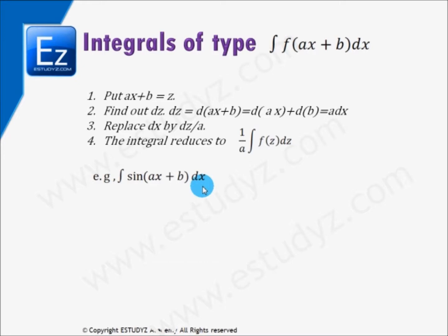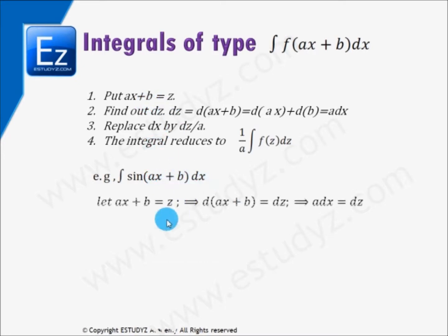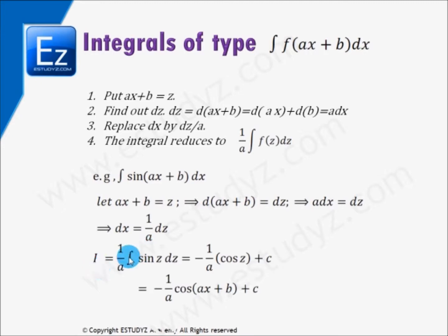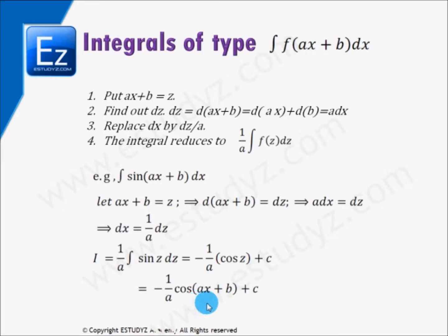We know that the integration of sin(x) dx is −cos(x) + c. But here we don't have sin(x) — we have sin(ax + b). So we replace ax + b by z, giving dx = dz/a. The integration reduces to (1/a) × integral of sin(z) dz, which equals −(1/a) cos(z), because the integration of sin(z) dz is −cos(z). Adding the constant of integration, the answer is −(1/a) cos(ax + b) + c.